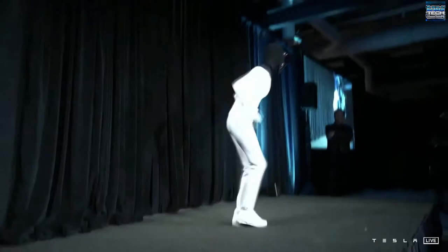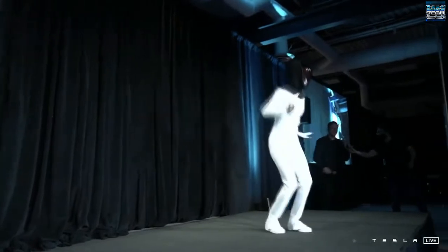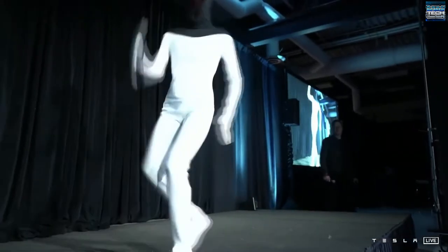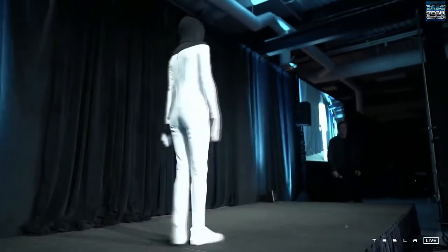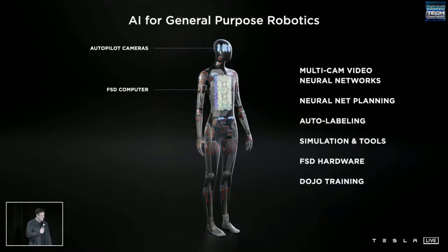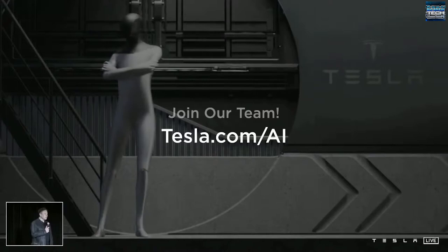During the presentation, an actor dressed as the bot danced on stage, with Elon remarking that the robot they're planning to build would of course be a real machine. The prototype, he estimates, is to be released sometime next year in 2022. However, the CEO is known not to be too keen with deadlines, so the actual release may or may not happen in the year to come.